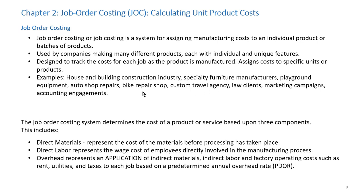Job order costing is not limited to manufacturing firms. Service companies would use job order costing to determine customer costs, such as legal clients, the cost of marketing campaigns, and the cost of accounting engagements. The job order costing system determines the cost of a product or service based upon direct materials, direct labor, and overhead. While our focus will be on manufacturing firms, the process is basically the same for service companies.